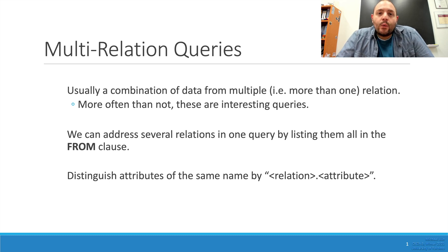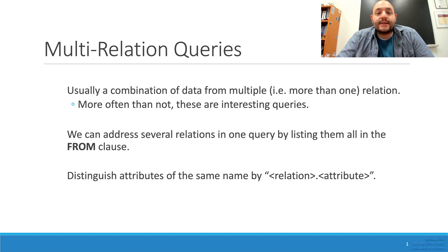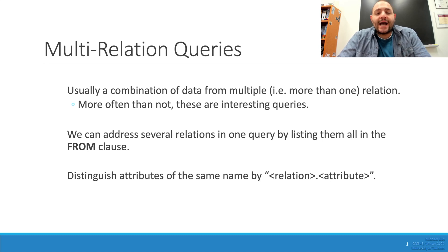Now where it becomes a little bit more complicated is what happens if some of our tables have similarly named attributes. For example, beers has an attribute 'name' and bars has an attribute 'name' — how do we identify those differently?